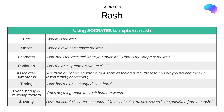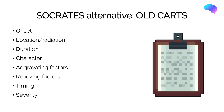These three examples show how flexible the SOCRATES framework can be and how it can be used in a variety of situations to help structure your questioning. There are also alternatives to the SOCRATES framework — one example is OLD CARTS, which stands for Onset, Location or Radiation, Duration, Character, Aggravating factors, Relieving factors, Timing, and Severity. As you can see, this mnemonic covers most of the same areas as SOCRATES and can likewise be used for a wide variety of symptoms.